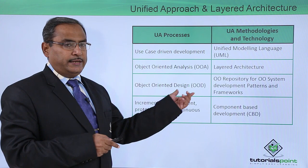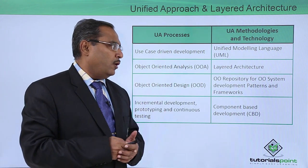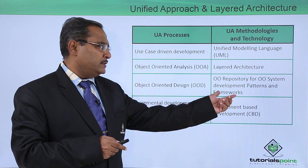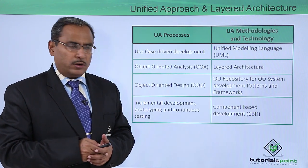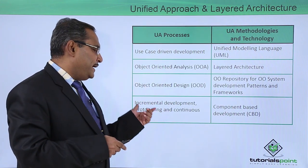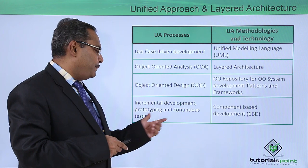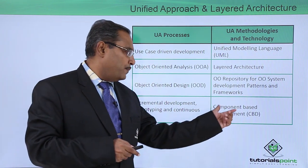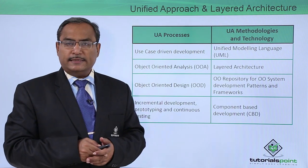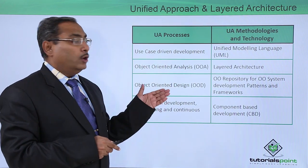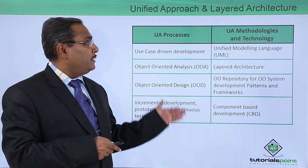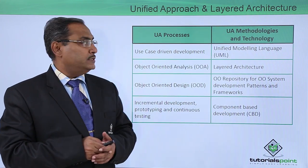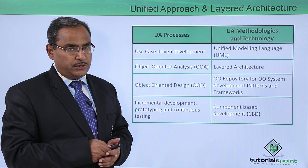Next is object oriented design, where we have an object oriented repository for object oriented system development patterns and the respective frameworks. Next is incremental development, prototyping and continuous testing, where we have component based development (CBD). So on the left column we have the UA processes and on the right hand side we have the UA methodologies and the respective technologies to be used.